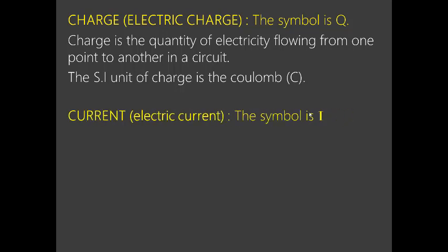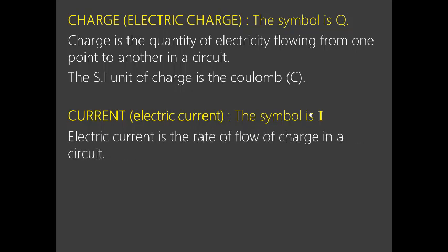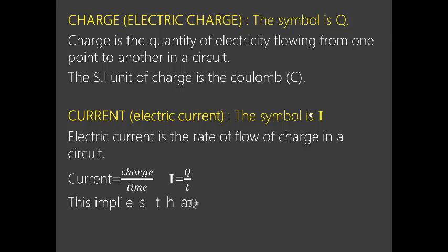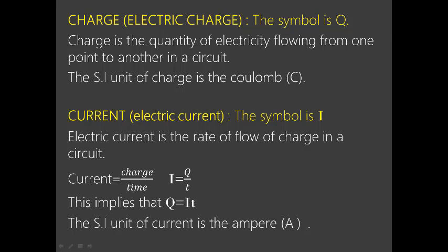Electric current, whose symbol is capital I, is the rate of flow of charge in a circuit — it is the ratio of charge to time: I = Q/t. This implies that Q = It. The SI unit of current is the ampere, abbreviated by capital A, named after André-Marie Ampère.